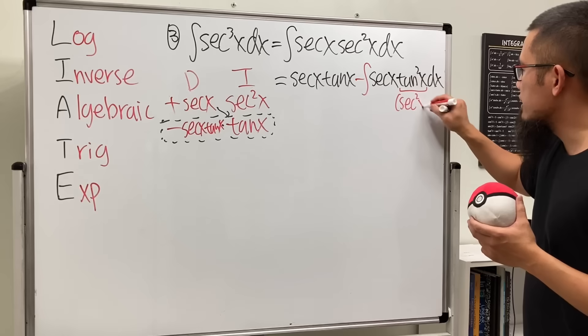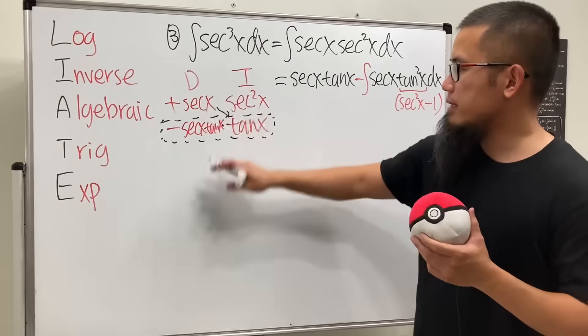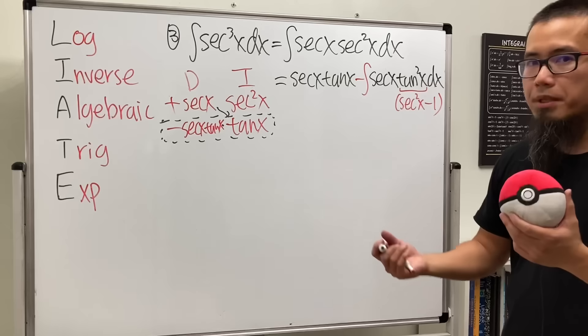And this is the time that we will be using the identity and tangent squared x is the same as secant squared x minus 1. So if you look at this carefully, I'm going to actually write this down again because you will see this is actually a repeating case.